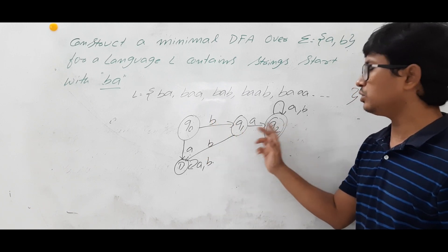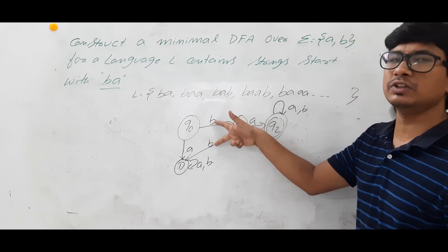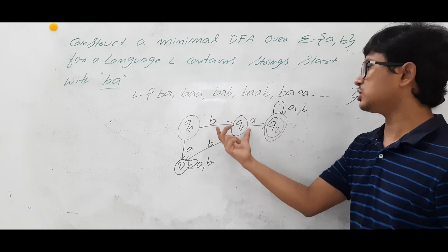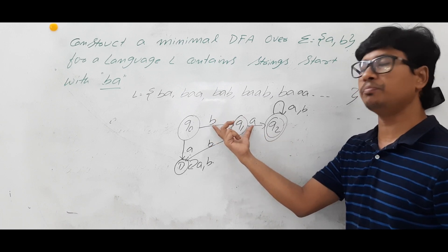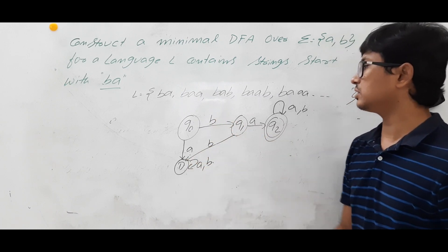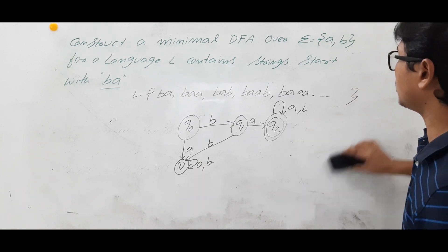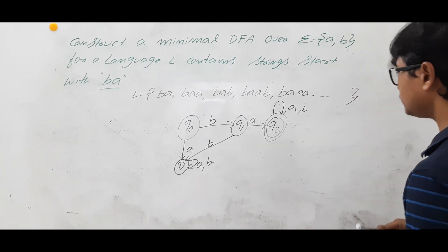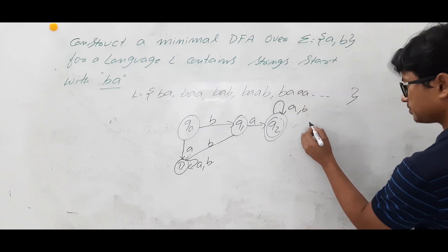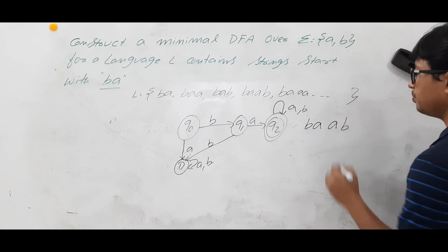From Q1 on B, what happens? If B comes at Q1 the string starts with BB, and I don't want that — all strings should start with BA. So from Q1 on B, it should go to the dead state. Now we will check whether this is a correct DFA.